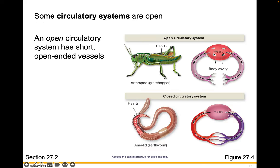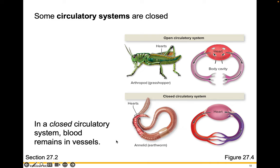Some circulatory systems are open. An open circulatory system has short, open-ended blood vessels, and the circulatory fluid basically spills into the body cavity. In a closed circulatory system, the blood remains within the blood vessels.